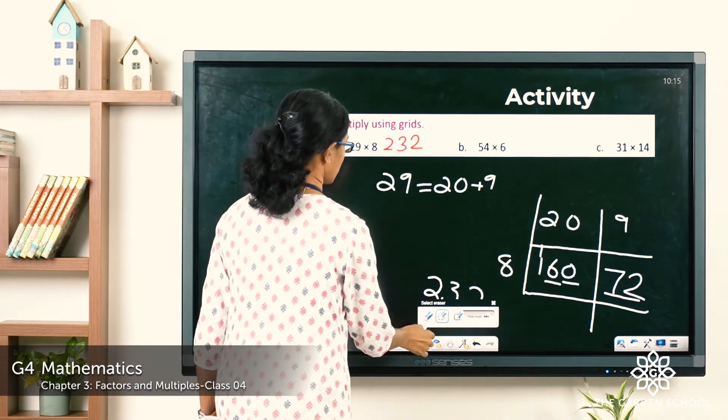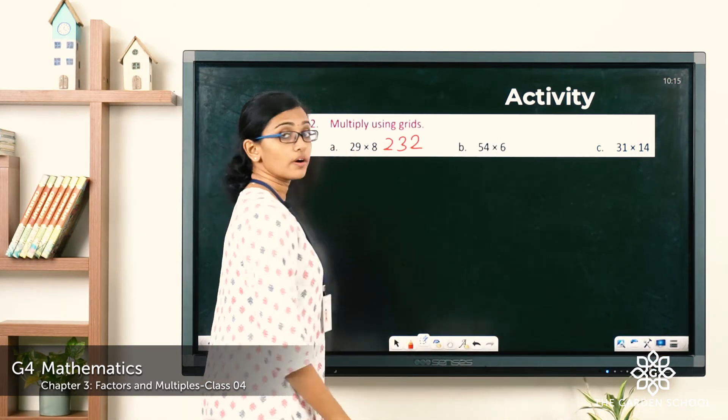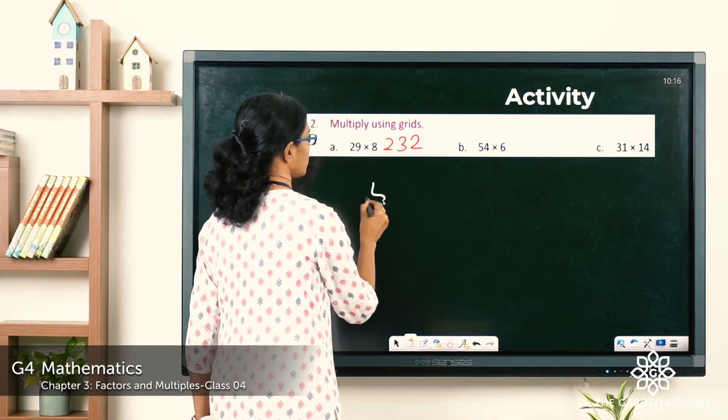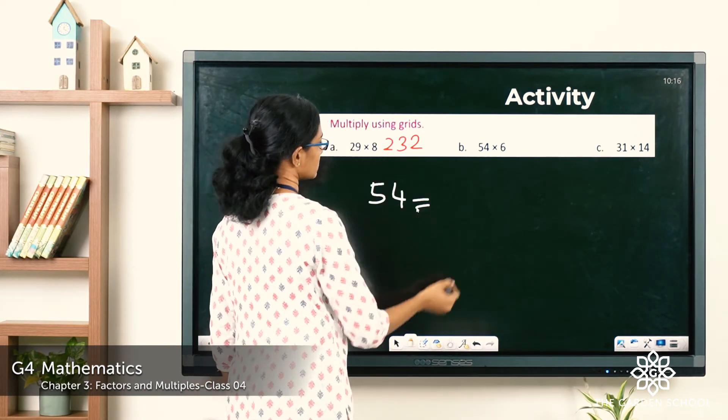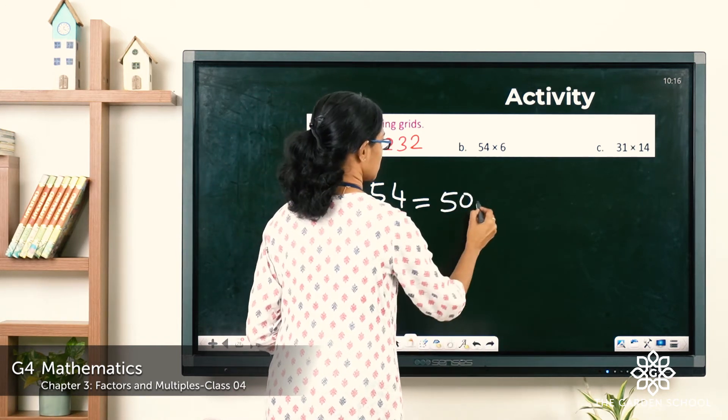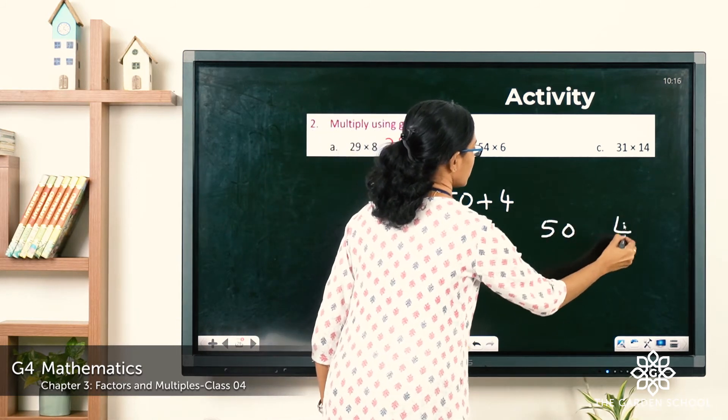Let's see the next one, question B. 54 into 6. Let's see how we can split 54. 54 can be written in terms of multiples of 10 as 50 plus 4. So let's draw the grid, 50 and 4 here.